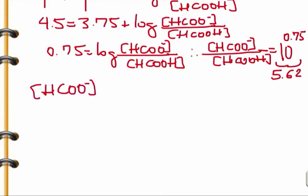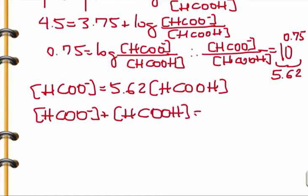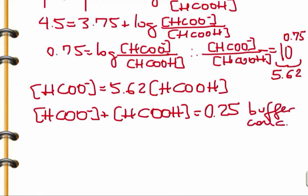So now we can write two equations. The first is that [HCOO⁻] equals 5.62 times [formic acid]. We need a second equation: the sum of the concentration of formate and formic acid equals the buffer concentration. That gives us [formate] plus [formic acid] equals 0.25 molar, the buffer concentration given in the problem.